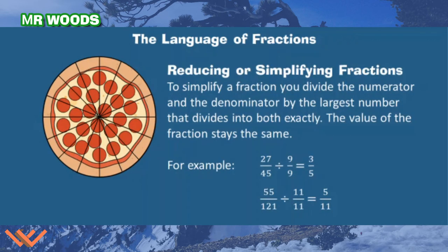Reducing or simplifying fractions. So to simplify a fraction, you have to divide the numerator and the denominator by the largest number that divides into both exactly. So the value of a fraction stays the same. For example, if I have 27/45, I'm looking at that, I'm like, wait a minute. I can divide both the top and the bottom by nine. So 27 divided by 9 is equal to 3. And 45 divided by 9 is equal to 5.